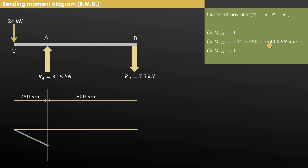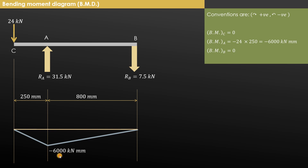Using these values we draw the bending moment diagram: at the end points it is 0, and at point A it is minus 6000 kN·mm. In this way we can draw the shear force and bending moment diagram for a simply supported beam carrying a point load with a left hand side overhang. Thank you very much for watching.